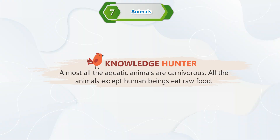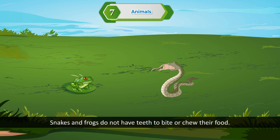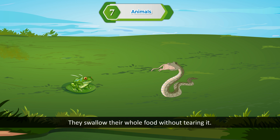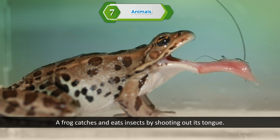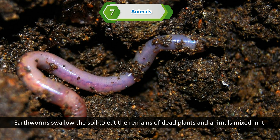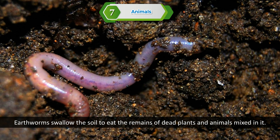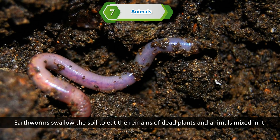Knowledge Hunter: almost all aquatic animals are carnivorous. All animals, except human beings, eat raw food. Swallowing: snakes and frogs do not have teeth to bite or chew their food; they swallow their whole food without tearing it. A frog catches and eats insects by shooting out its tongue. Earthworms swallow soil to eat the remains of dead plants and animals mixed in it.